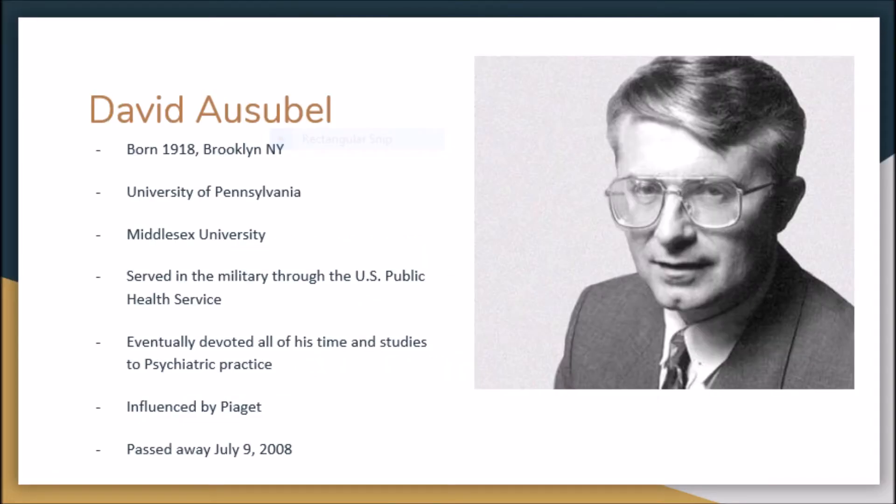David Ausubel was born in 1918 in Brooklyn, New York. He attended the University of Pennsylvania, where he first received his bachelor's in pre-med and psychology. He later attended Middlesex University, where he earned his medical degree, and then went on to receive his Ph.D. in developmental psychology through Columbia University in 1950.